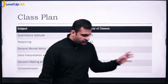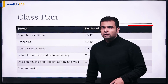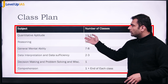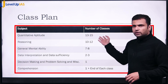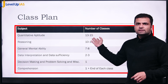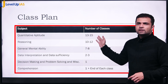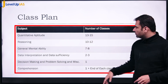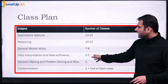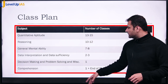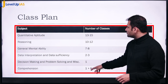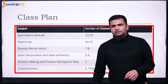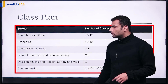Here is the rough structure of the classes: Quantitative Aptitude has 13 to 15 classes, then there is Reasoning, General Mental Ability, Decision Making, Data Interpretation, Data Sufficiency, and of course Comprehension — one dedicated class for that, plus comprehension practice at the end of every class.